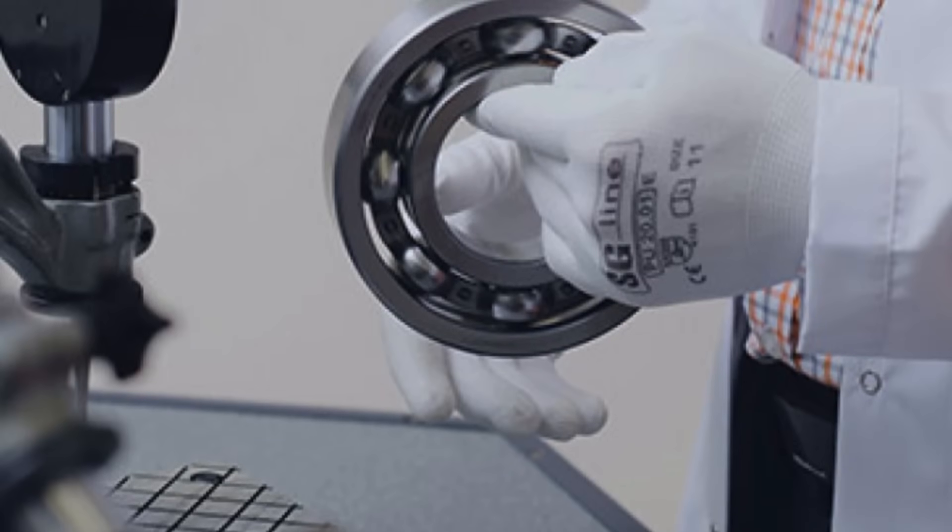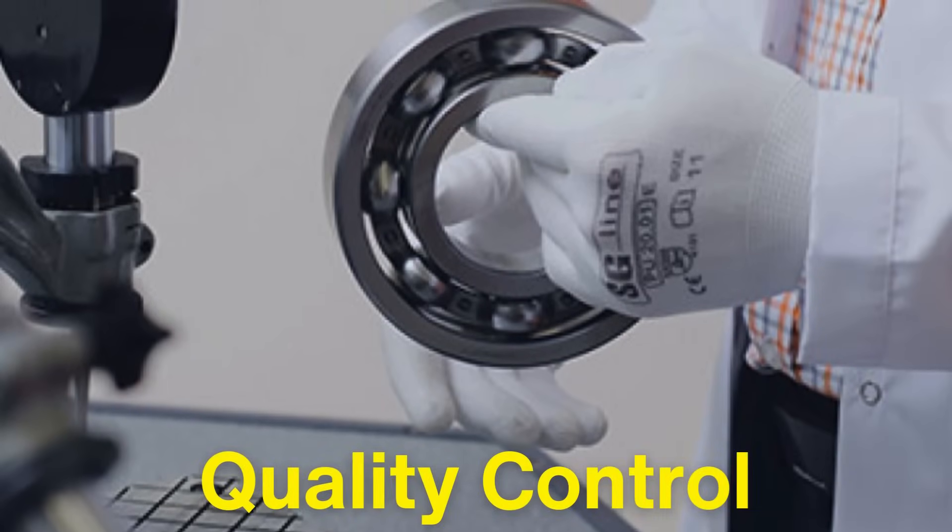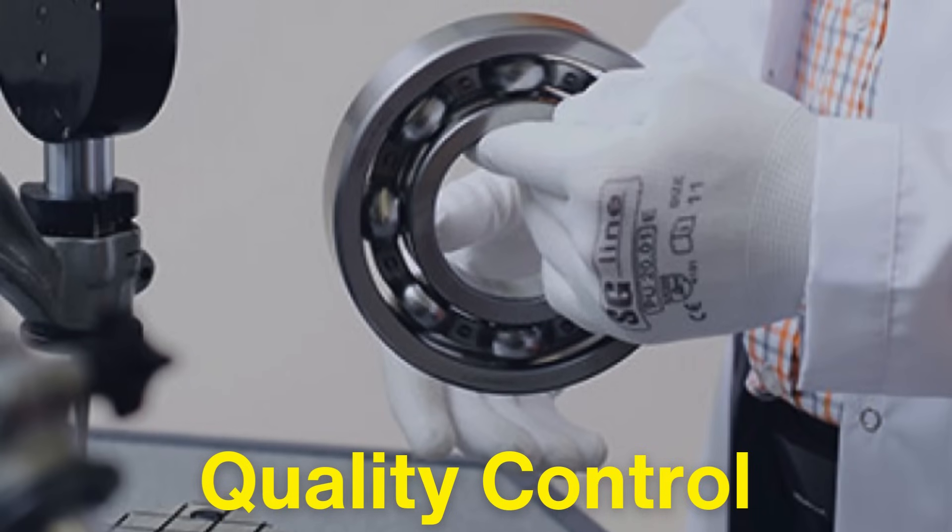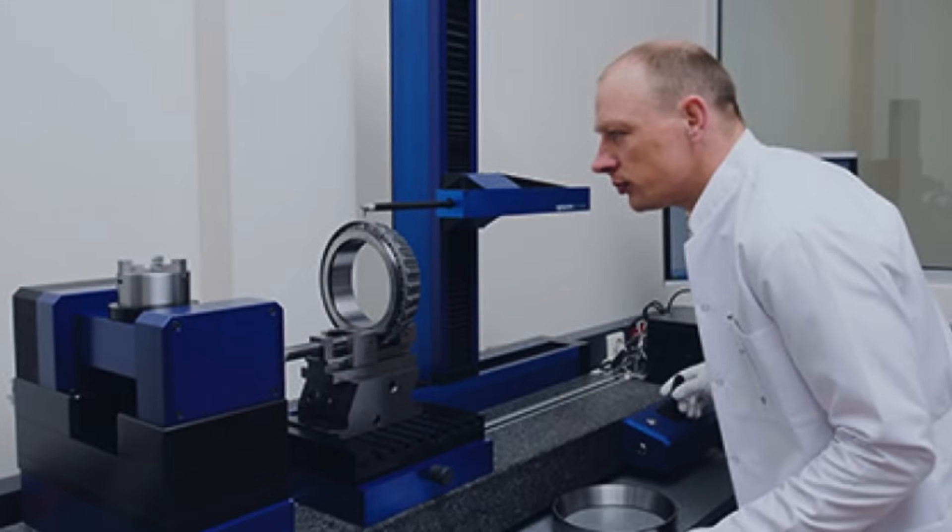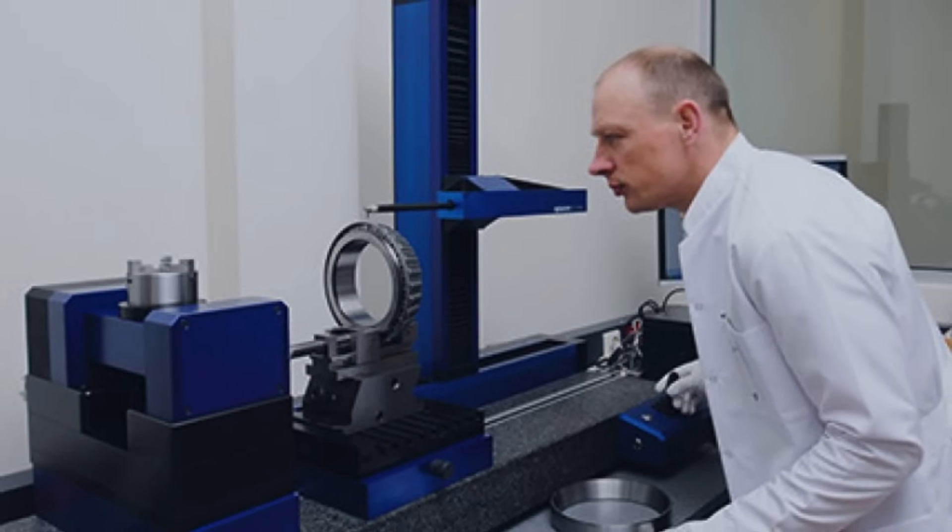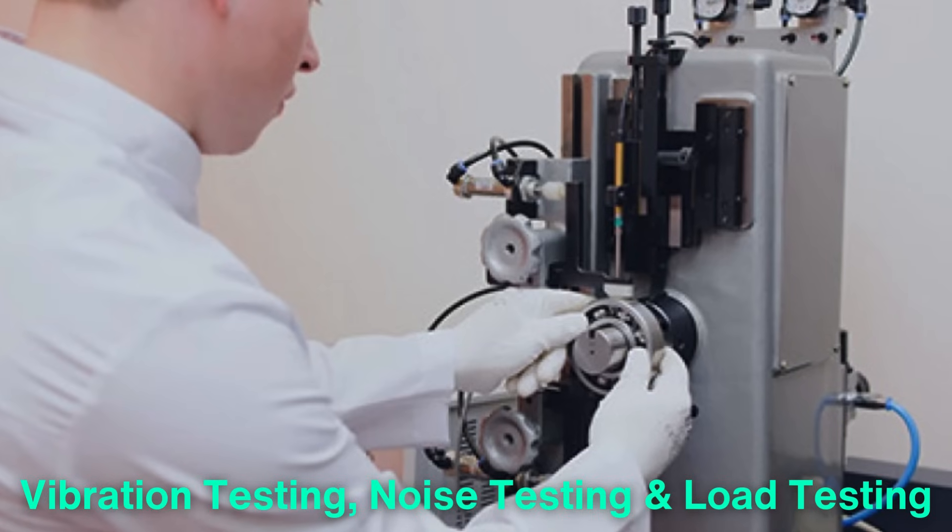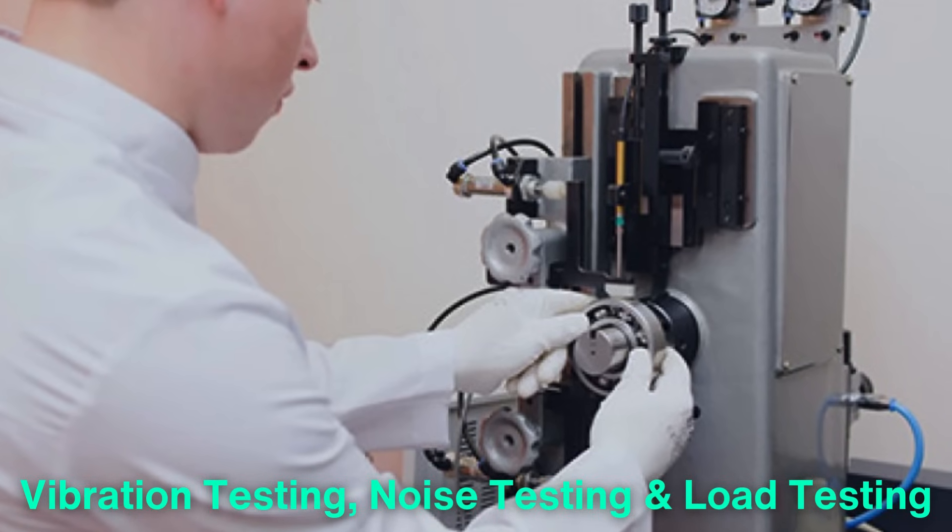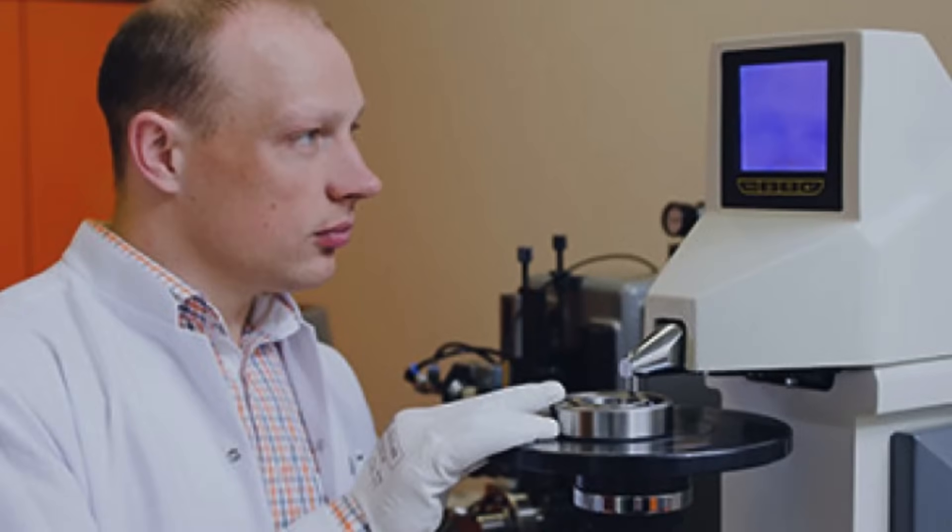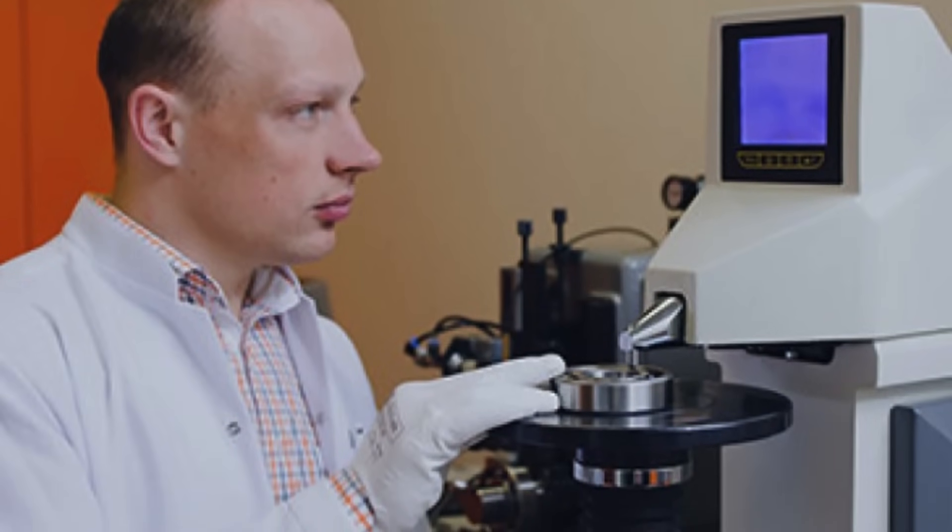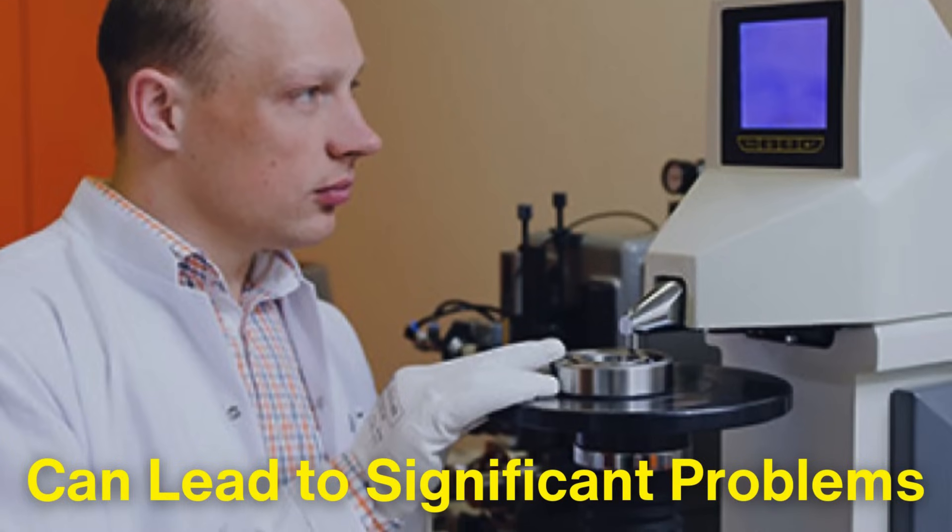The last stage in the production process is quality control. Every ball bearing must undergo a series of rigorous tests to ensure it meets the necessary specifications. These tests check everything from the precision of the parts to the smoothness of the rotation. Vibration testing, noise testing, and load testing are just a few of the methods used to verify that each ball bearing will function correctly in its intended application. The level of precision in ball bearing production is extraordinary. Even the smallest imperfections can lead to significant problems when the bearings are in use.